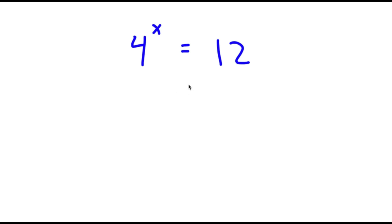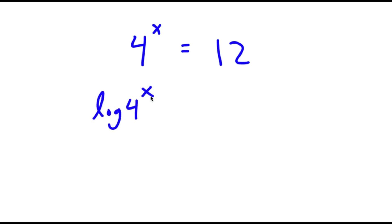In this problem I have 4 to the power of x is equal to 12. To solve this, I'm going to first start by taking the log on both sides. So now I have log of 4 to the power of x is equal to log 12.